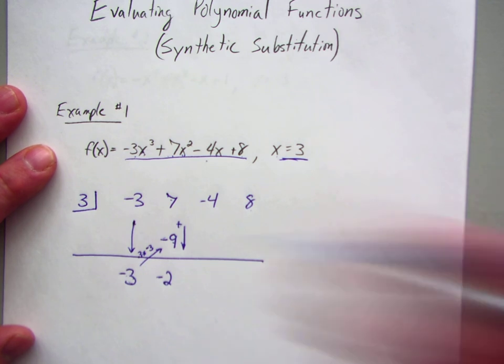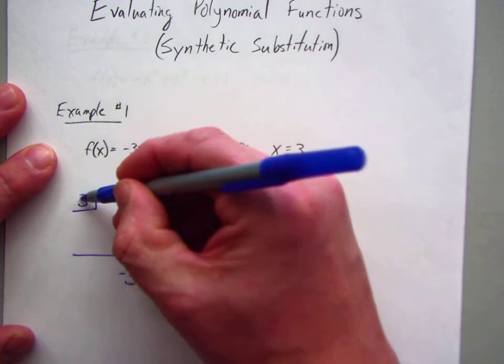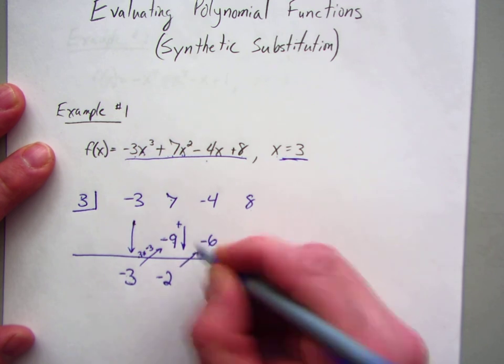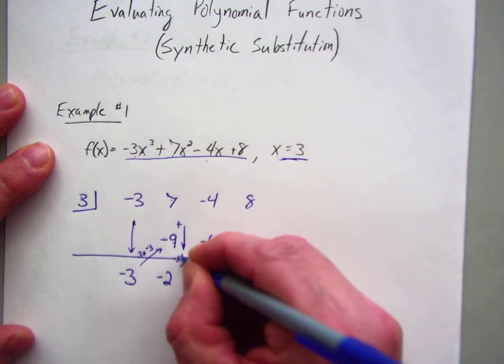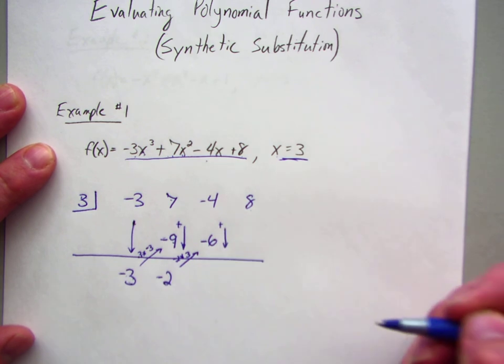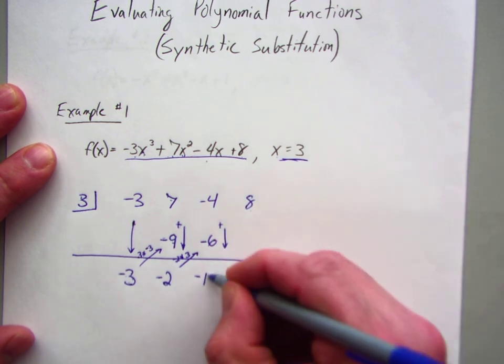And I repeat the process again. So negative 2 times 3 is negative 6. That goes in the next spot. So this is negative 2 times 3. And then I add going down. So that gives me negative 10.